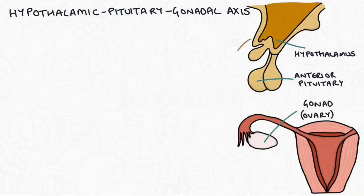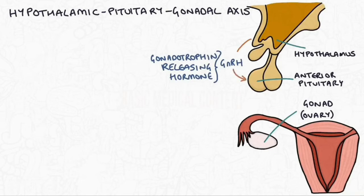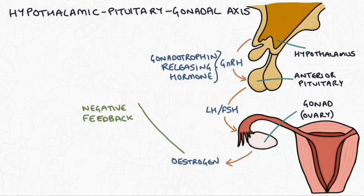The hypothalamus produces gonadotropin releasing hormone or GnRH and the GnRH stimulates the anterior pituitary gland to produce LH and FSH. LH and FSH then stimulate the development of the follicles and the ovaries and the follicles themselves and the ovaries release estrogen and then estrogen goes on to have a negative feedback effect on the hypothalamus and the pituitary gland.